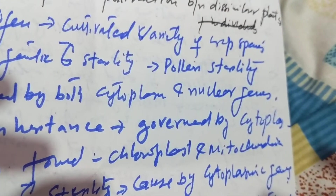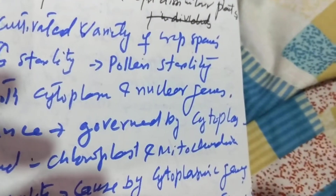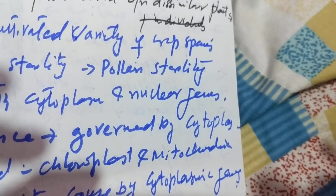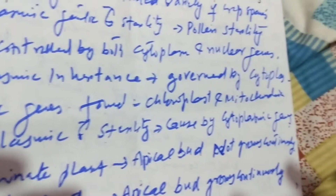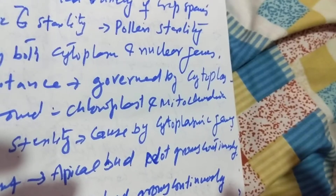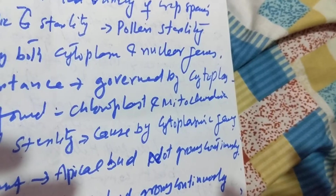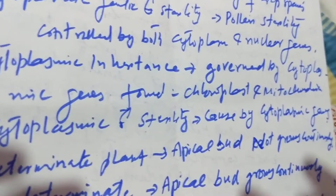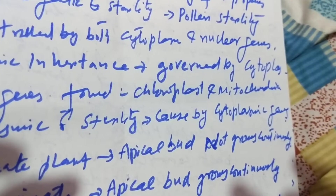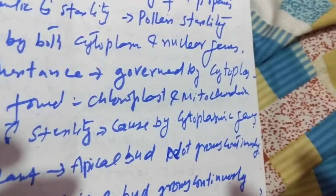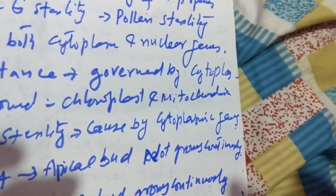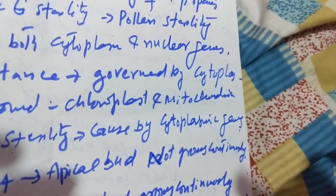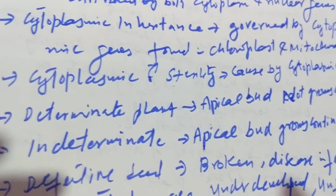Cultivar is a cultivated variety of a crop species. Cytoplasmic genetic male sterility is when pollen sterility is controlled or governed by both cytoplasm and nuclear genes. Cytoplasmic inheritance is governed by the cytoplasm; cytoplasmic genes are found in chloroplasts and mitochondria.